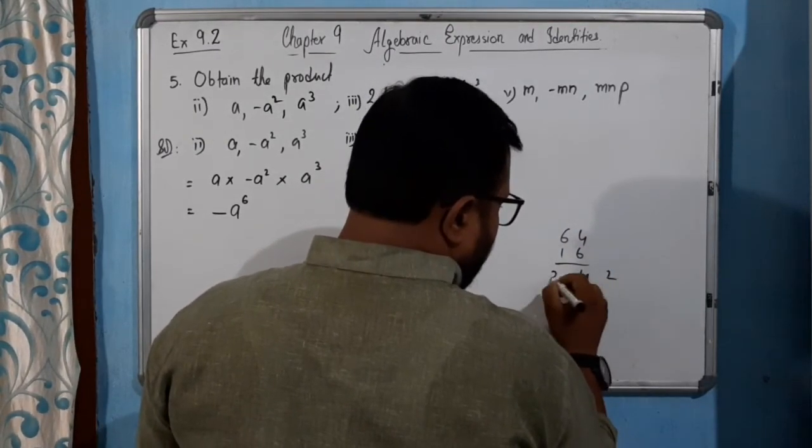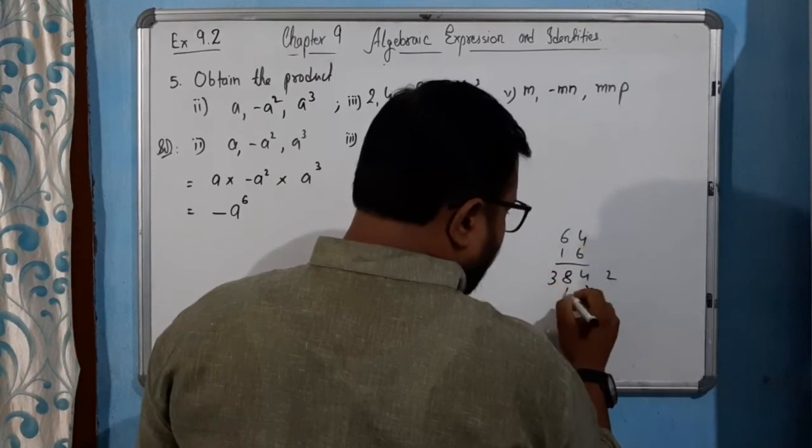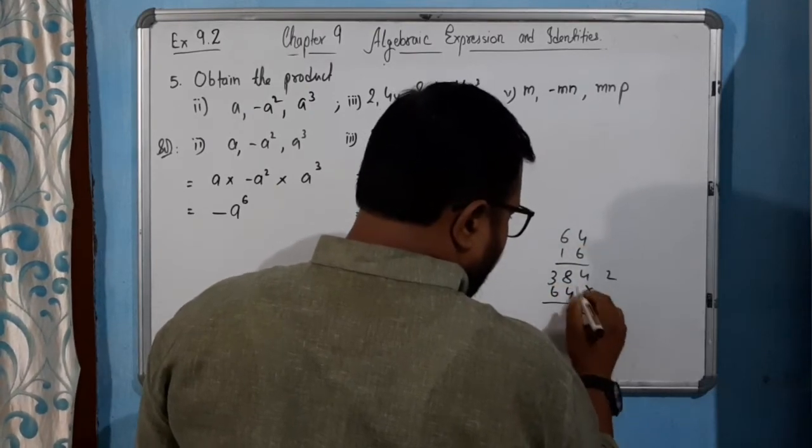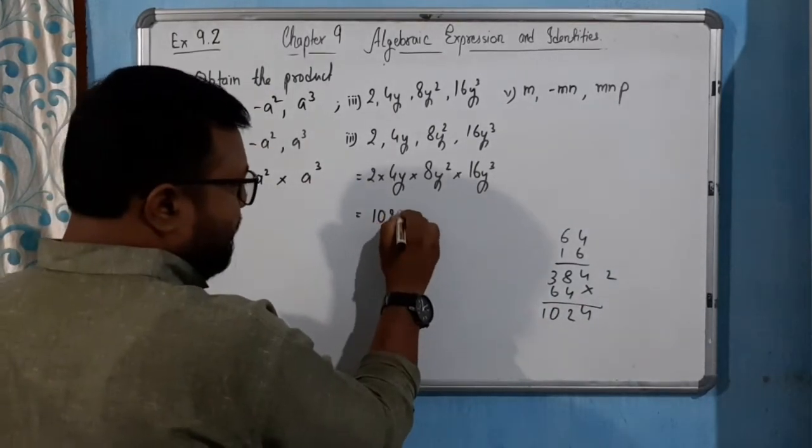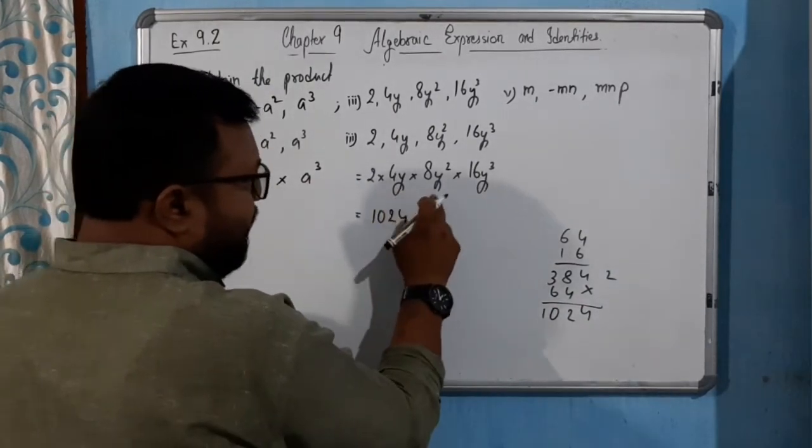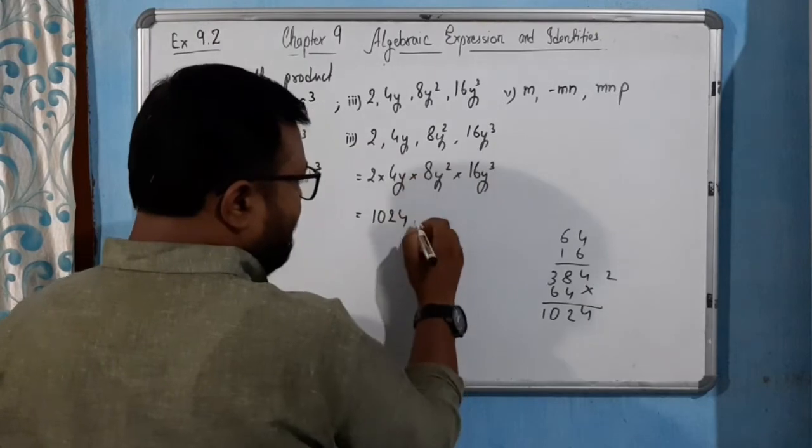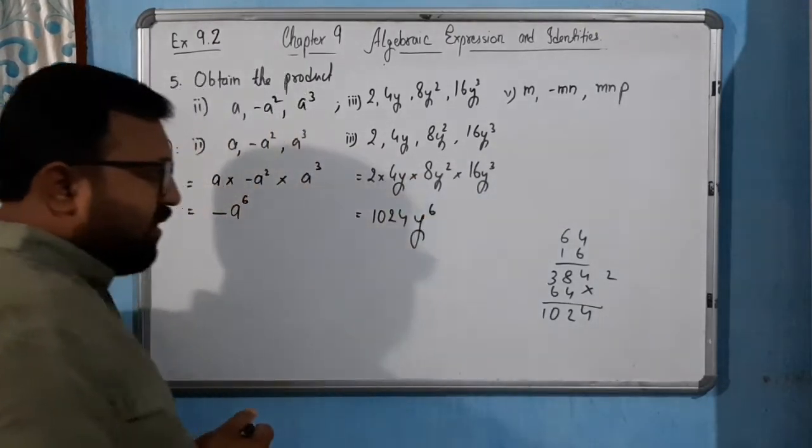4 carry 2, 6, 38, 4, 6, 4, 12 carry 1, 1, 0, 2, 4. So you will get 1024. And y, y square, y cube - 3, 4, 5, 6 means y to the power 6. This is the answer.